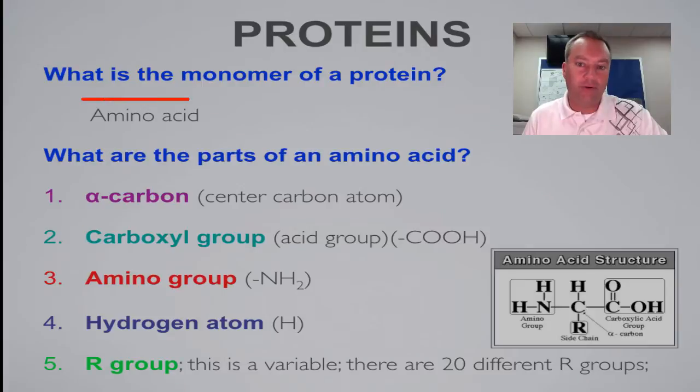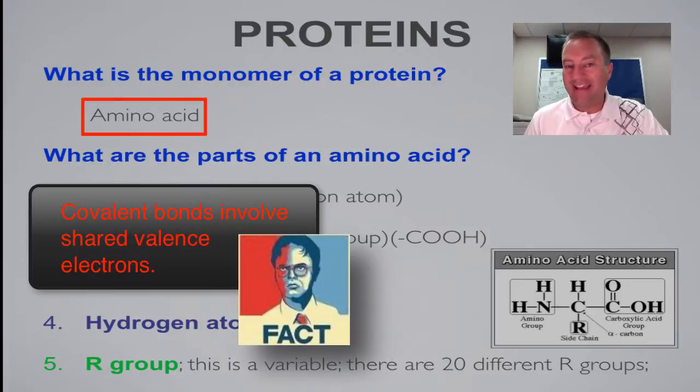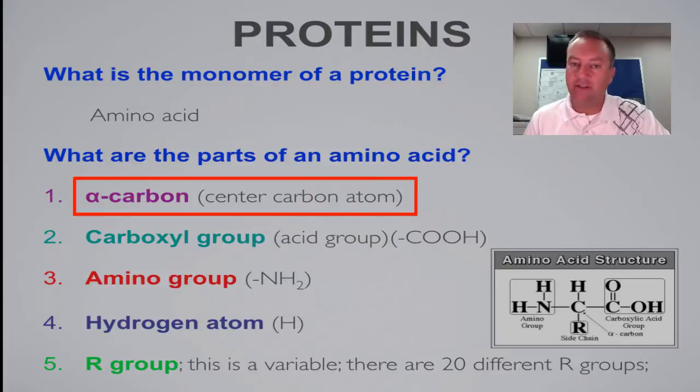Now, the monomer of a protein is a molecule called an amino acid. Remember, anything that is a molecule is going to be held together by covalent bonds. An amino acid actually has five parts. In the center is going to be an alpha carbon, and that's just a carbon molecule. Remember, carbon can form four covalent bonds at once, so the other four things are going to be attached to that alpha carbon.